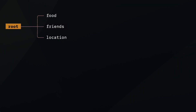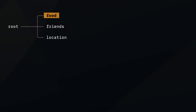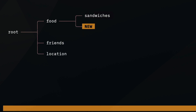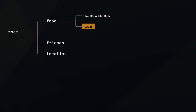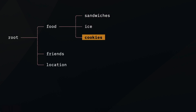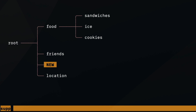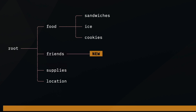Once you get used to J and K, it's right there on the home row and very easy — you start to love it. Similarly, you can use H and L to move left and right. If I want to add a new child item, it's Shift-O or Tab. So for food, I could add sandwiches and maybe ice cookies. Then I can navigate left, go down, and add an item like supplies. Going back up, I can add another item like 'make an email list.'